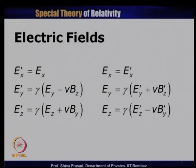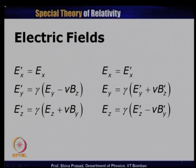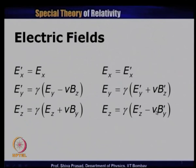This is the electric field transformation. If I know in frame S the electric field components Ex, Ey, Ez and the magnetic field components Bx, By, Bz, then in frame S' — where S and S' have the standard Lorentz transformation relationship — Ex' equals Ex, Ey' equals gamma(Ey − VBz), and Ez' equals gamma(Ez + VBy). Similarly, we can write the inverse transformation: if I know the fields in the primed frame, I can find the electric fields in the unprimed frame S.